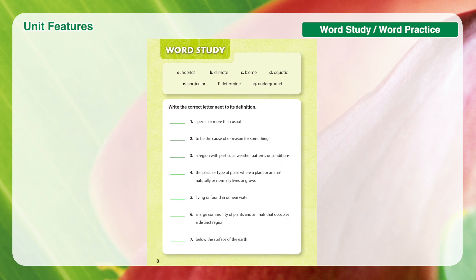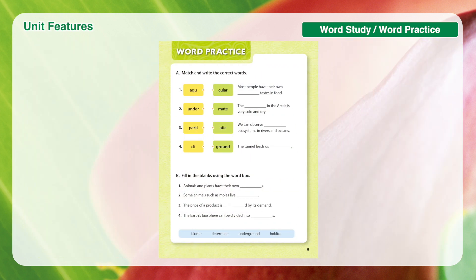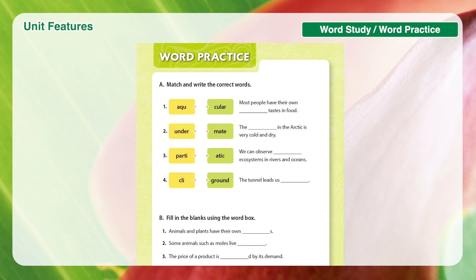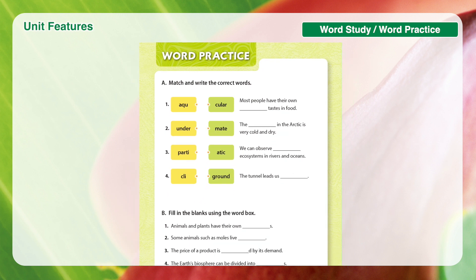The Keywords and Academic Vocabulary for Science are presented with detailed definitions and student-friendly example sentences. Students are encouraged to learn how to use the keywords by filling in the blanks in the example sentences. Word Practice is designed to review the keywords in the unit with two types of exercises. Students will be able to reinforce their science vocabulary while they match, fill in the blanks, find, circle, and unscramble the words.